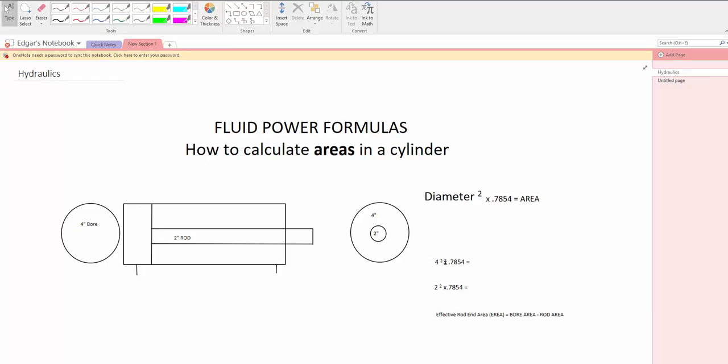So you have 4 squared times 0.7854 that will give you 12.5664 square inches that you have.